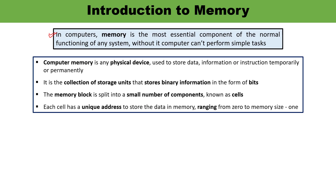Computer memory is nothing but a kind of physical device — you must have seen memory as well. Memory is used to store information, data, or instructions. Information can be stored temporarily as well as permanently, depending upon the application. Memory is a collection of storage units which stores binary information, and binary information is available in the form of bits.